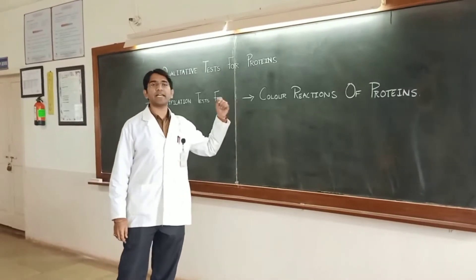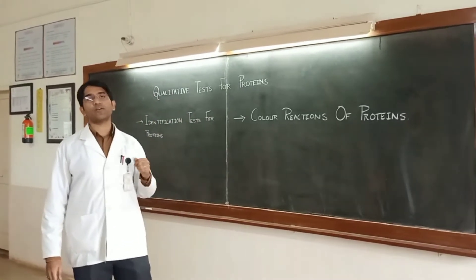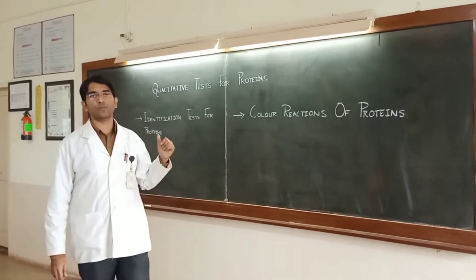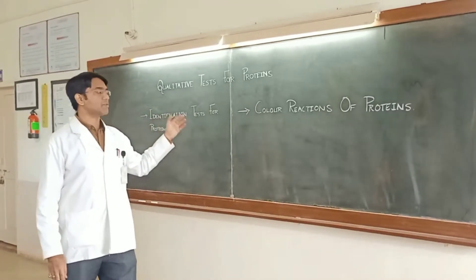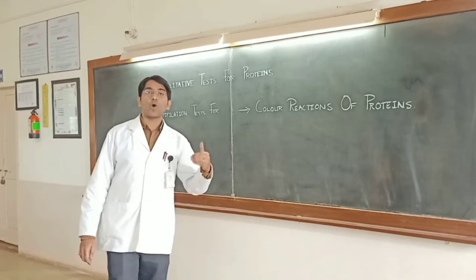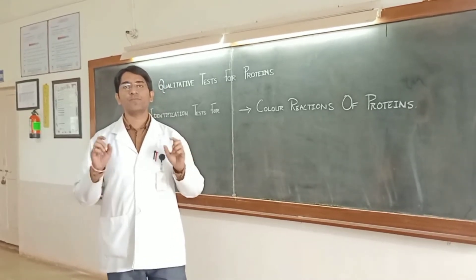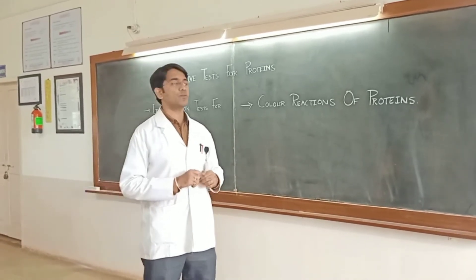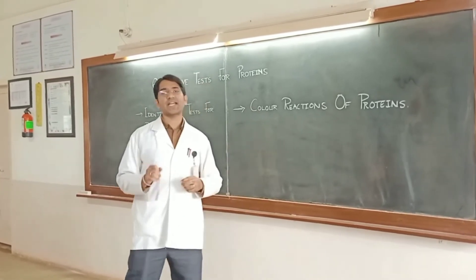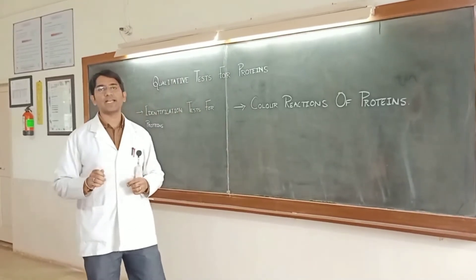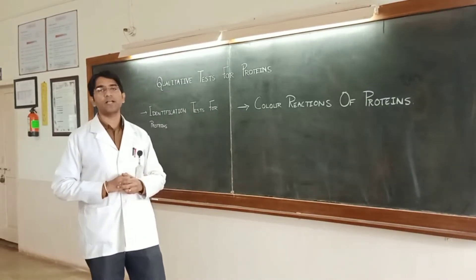Moving on to the color reactions with proteins — this is a different set of reactions. We have already identified the protein; now it is our work to identify what type of amino acids are present in those respective proteins. There are systematic reactions available, and by carrying out those reactions, we can determine which type of amino acids are present.